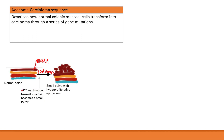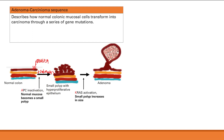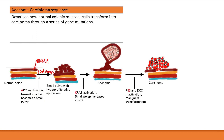The next mutation in the sequence is activation of the KRAS oncogene, which causes unregulated cell growth. This makes the small polyp increase in size, forming an adenoma. Finally, loss of tumor suppressor genes p53 and DCC causes malignant transformation, turning the adenoma into a carcinoma.